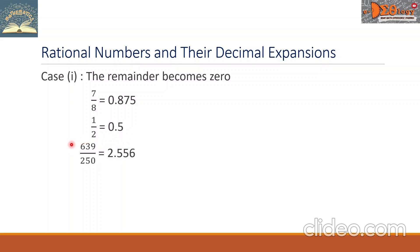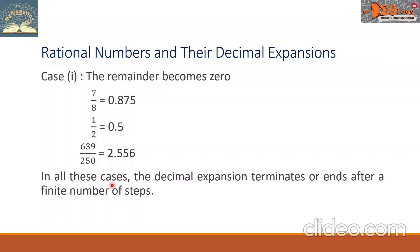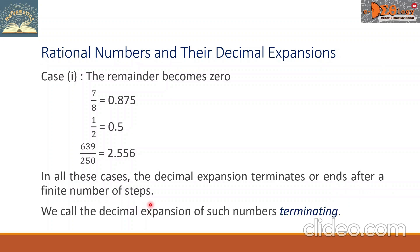Another example: 639 over 250 equals 2.556. In all these cases, the decimal expansion terminates or ends after a finite number of steps.